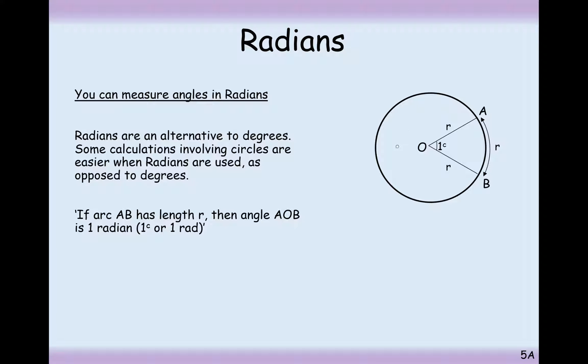A 360 degree turn only goes up to about 6 point something, 6.3, I think. So they don't go up to very big, they don't go all the way up to the number 360. They stay around about 6.5. So in this case here, an arc length r corresponds to when the angle inside the circle is one radian. And instead of using a circle to measure radian, we put a little c or a rad abbreviation.